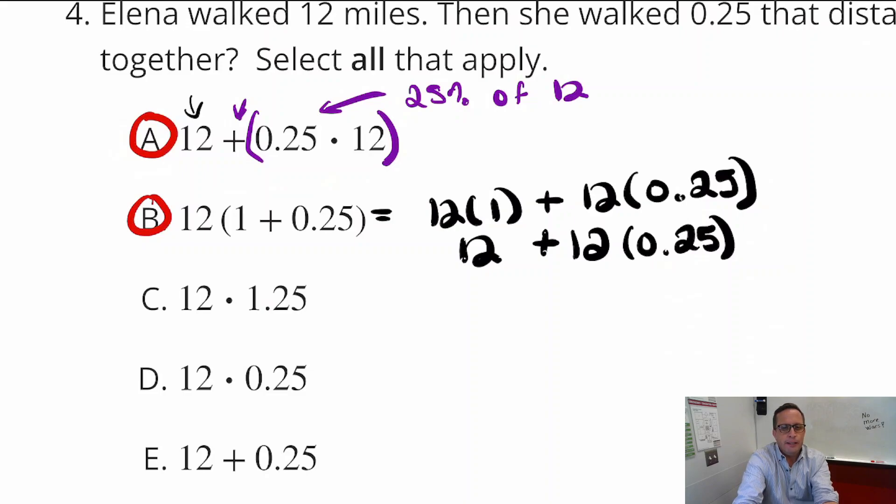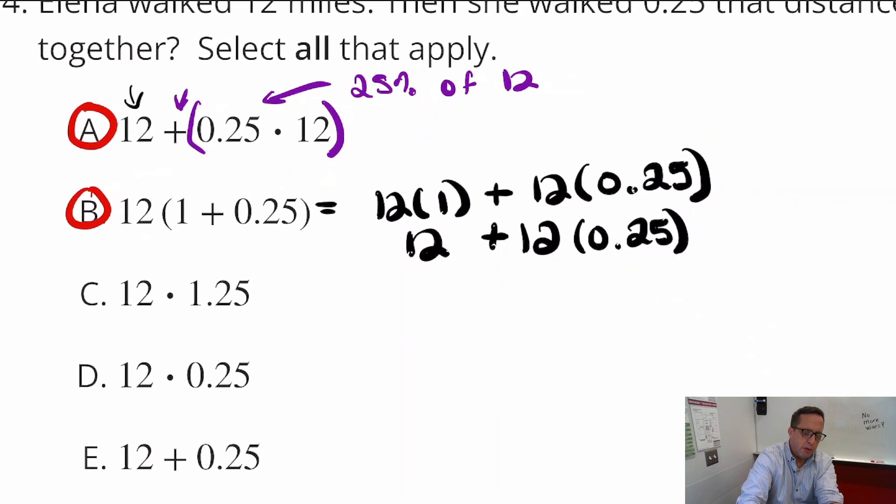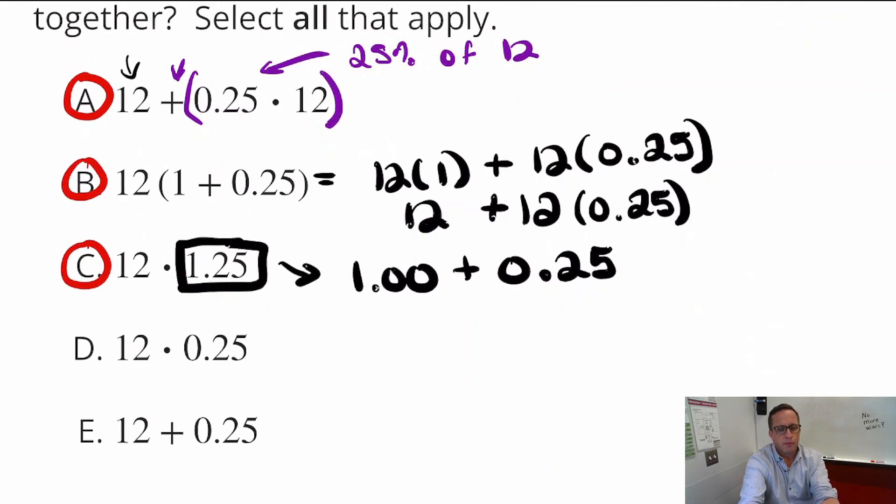And then C. Now, C is 12 times 1.25. Now, it's important for us to look at 1.25. Now, 1.25 is essentially 1 plus 25%. Which is what we've been doing for the previous two problems. So, C is going to work as well.